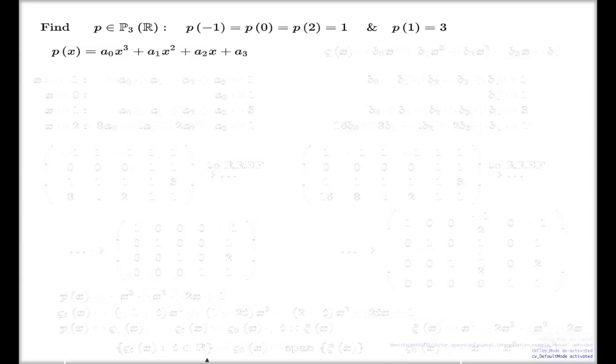Then you take these conditions which are supplied, you plug this condition into your polynomial, and you come up with a system of linear equations with respect to your unknown coefficients a₀, a₁, a₂, and a₃.